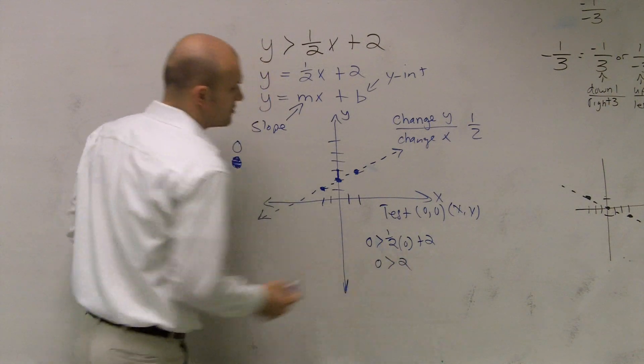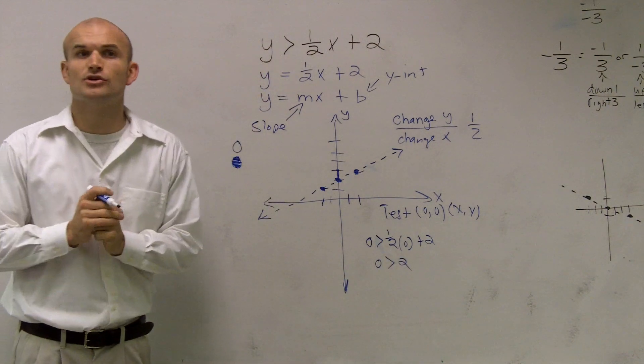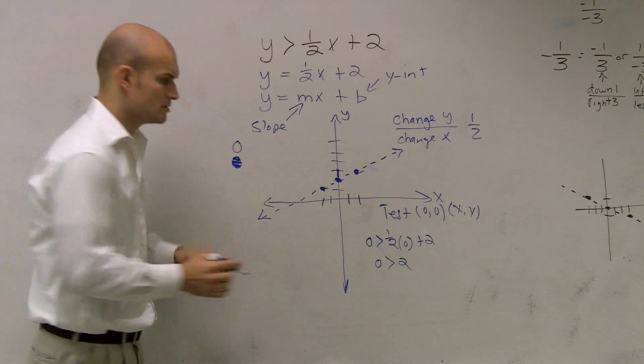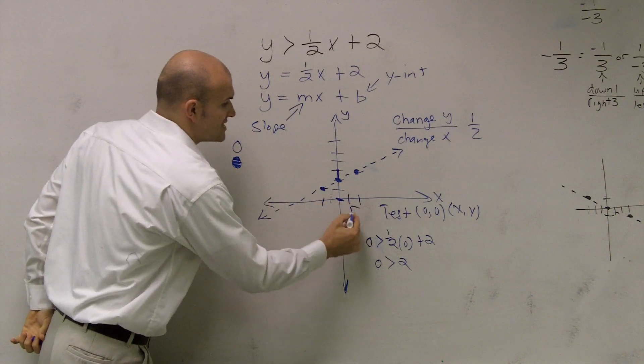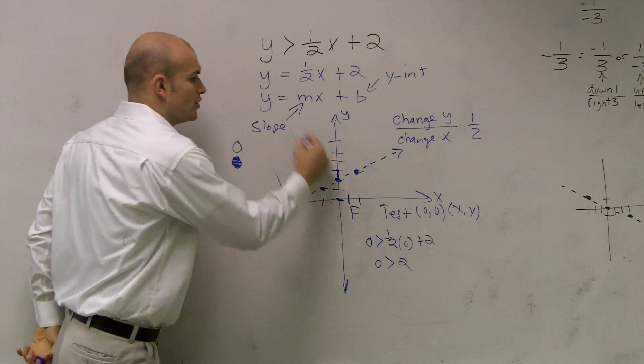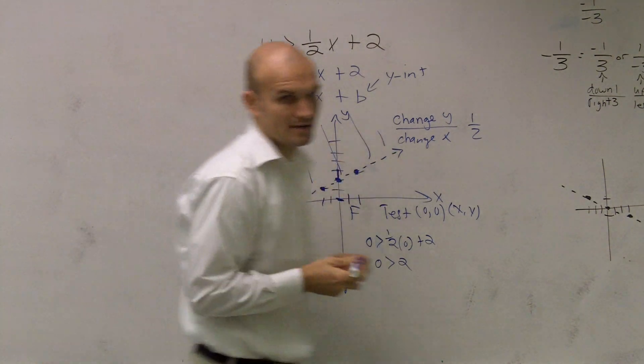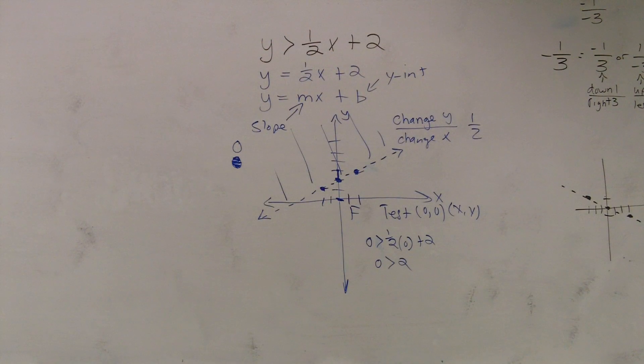0 is greater than 2. Is that true or false? Is that true or false? Is 0 greater than 2? False. So since that's false, you're going to shade above the line. Okay? All right. Cool story, girl. Tell them again.